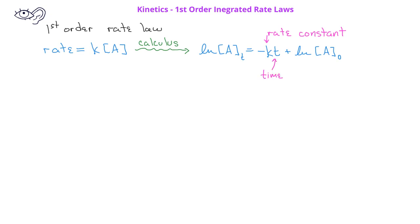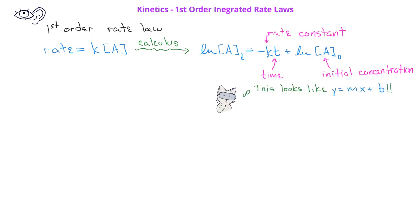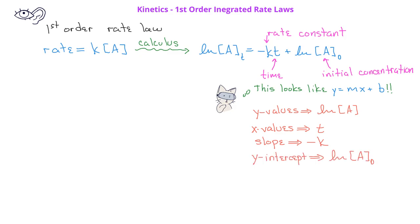The t is the time, and the concentration of A subscript zero is the initial concentration. Now, if you kind of squint your eyes and tilt your head to the left, you might say that this equation looks like the equation for a line: y equals mx plus b. In this case, the y value is the natural log of the concentration of A, the x values would be the time t, the slope of the line would be the negative rate constant negative k, and the y-intercept would be the natural log of the concentration of A at time zero.